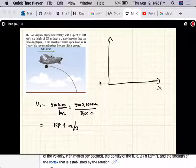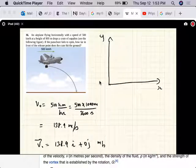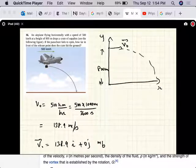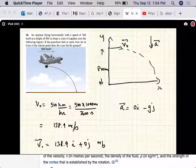So that's the initial speed. We set our axis up, X, Y. So the initial velocity is 138.9 i plus 0 j meters per second and this is 800 meters. And what is the acceleration? All right, so let's find the time of flight by looking at the Y component of the motion.